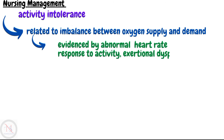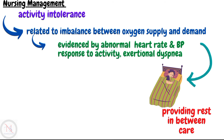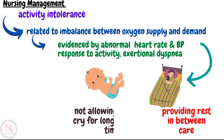The second nursing diagnosis is activity intolerance related to an imbalance between oxygen supply and demand, evidenced by abnormal heart rate or blood pressure response to activity and exertional dyspnea. Interventions include allowing rest periods between care, disturbing the patient only when necessary, avoiding allowing the infant to cry for long periods of time, and using a soft nipple for feeding or gavage feeding the infant.